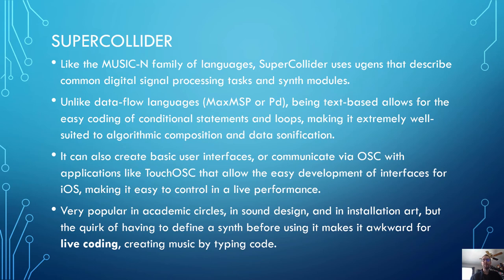Like the MusicN family of languages, Super Collider uses UGENs that describe common digital signal processing tasks and synth modules. But unlike data flow languages, being text-based allows for easy coding of conditional statements — if/then/else. For example: if the volume of this input exceeds this threshold, do X, otherwise do Y. That's very easy to do in Super Collider, but not as easily done in Max.